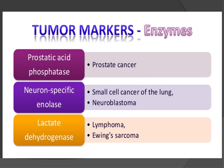Tumor marker enzymes include: acid phosphatase, increased in prostate cancer; neuron-specific enolase, increased in small cell cancer of the lung and neuroblastoma; and lactate dehydrogenase, increased in lymphoma and Ewing's sarcoma.